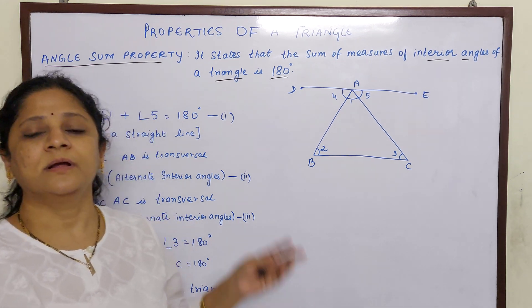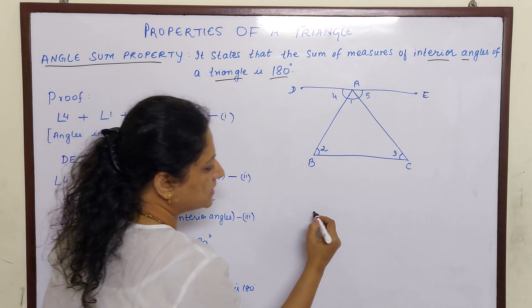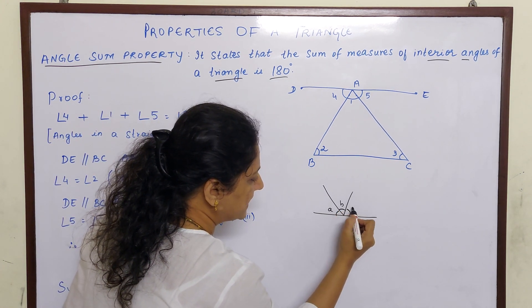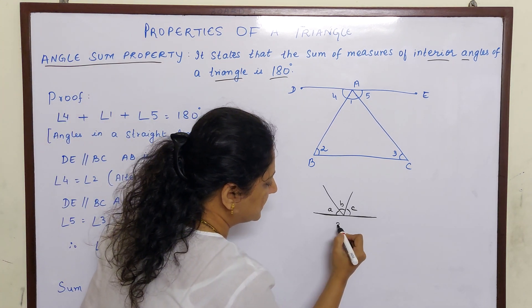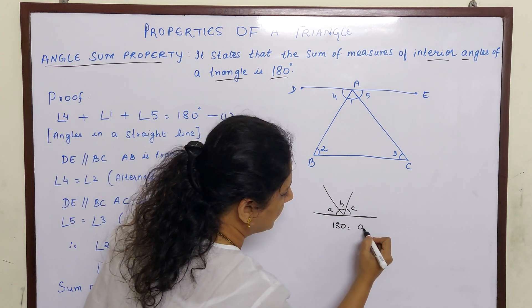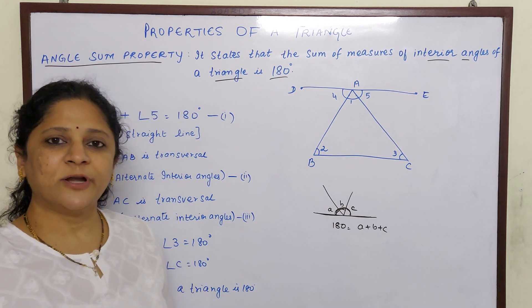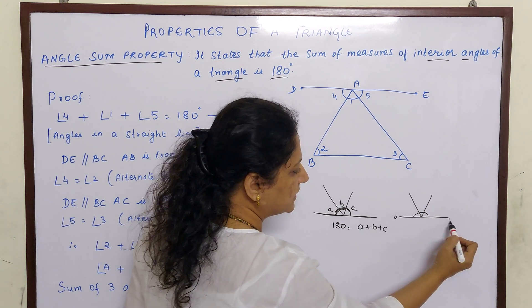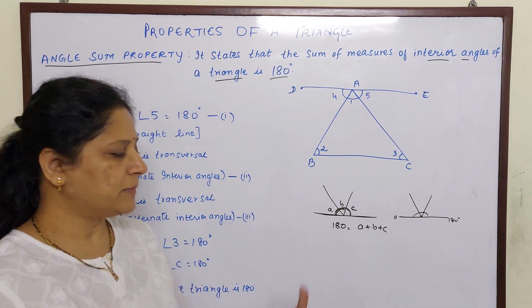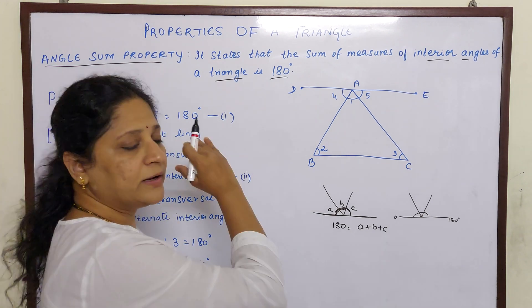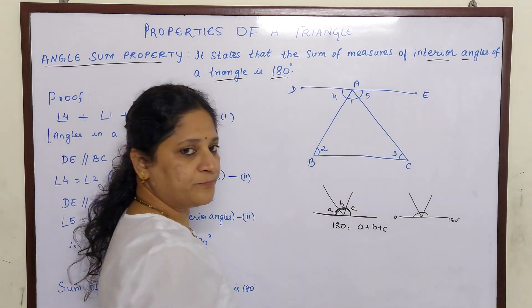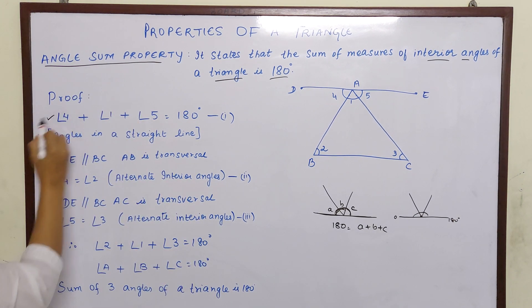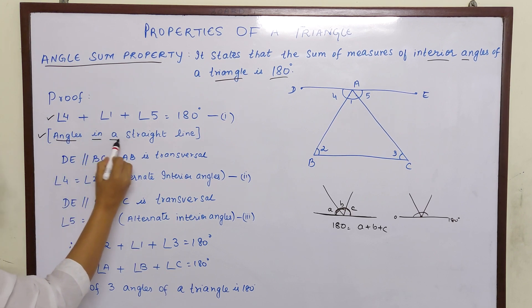But how did we arrive at this conclusion? That is the proof. We know that if I draw a straight line and mark a point V on it, the sum of these angles — let me name them A, B, C — is 180 degrees, because angles on a straight line are always equal to 180 degrees. Here the straight line is DAE. So 4 plus 1 plus 5 is also equal to 180 because they are angles on a straight line.